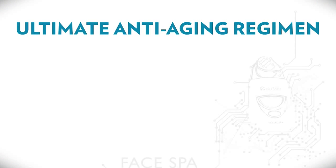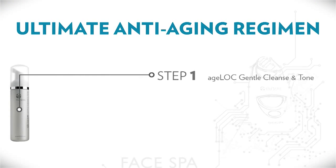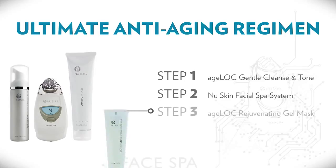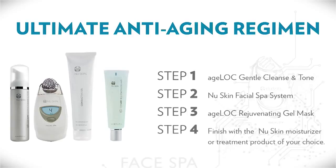The ultimate anti-aging regimen. Step 1 is Agelok Gentle Cleanse and Tone — use this to gently cleanse and tone your skin in preparation for subsequent steps. It also includes your first dose of Agelok ingredients. Agelok is Nu Skin's innovative research approach where we seek to treat the sources of aging and not just signs and symptoms. The second step is Nu Skin's Facial Spa System. Third step is Agelok Rejuvenating Gel Mask. Step 4 is to finish with a Nu Skin moisturizer or treatment product of your choice.